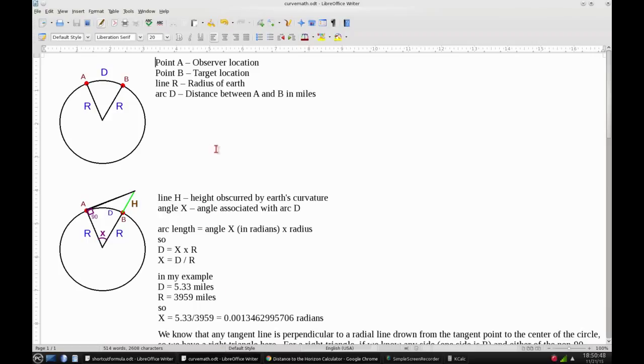This is probably math you guys haven't done since high school, so I'm going to try to break it down into sections so it's not too overwhelming. This is your basic overview here. The circle represents the earth. Point A is where the observer is. Point B is where the target is.